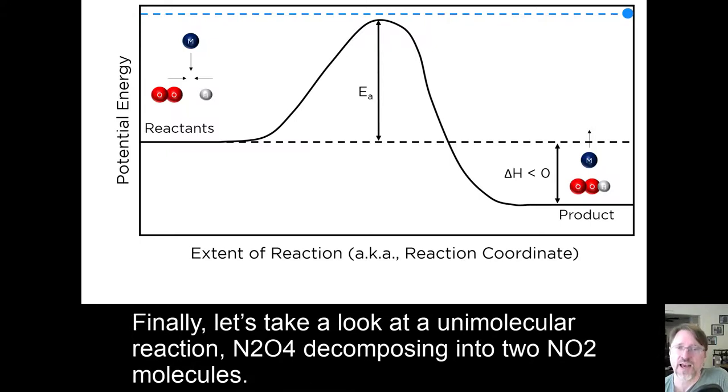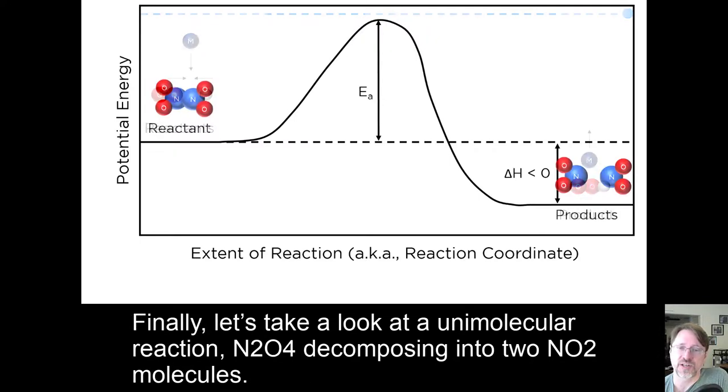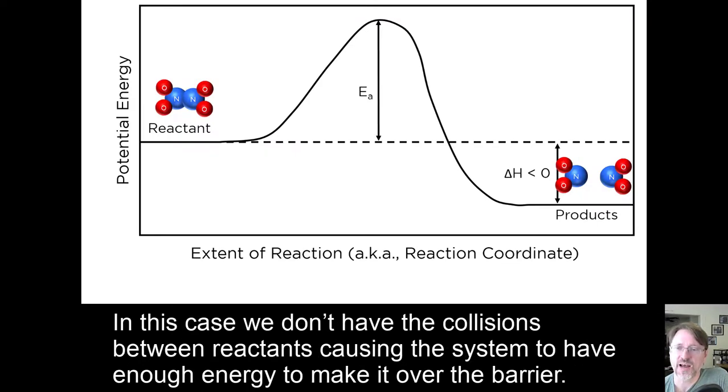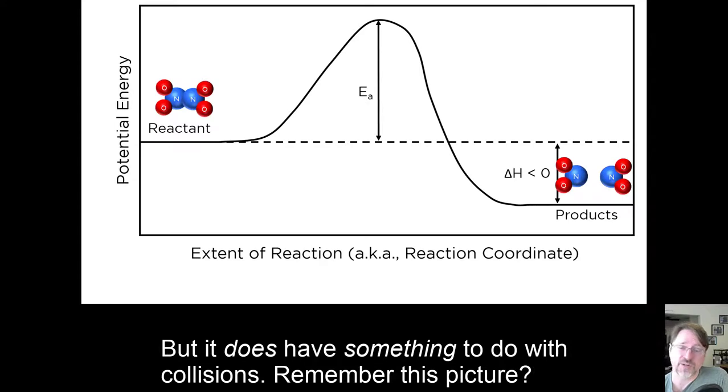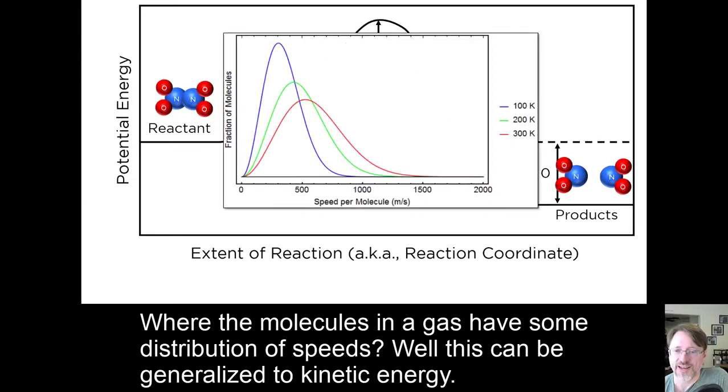Finally, let's take a look at a unimolecular reaction, N2O4, decomposing into two nitrogen dioxide molecules. In this case, we don't have the collisions between reactants causing the system to have enough energy to make it over the barrier. But it does have something to do with collisions. Remember this picture? Where the molecules in a gas have some distribution of speeds?